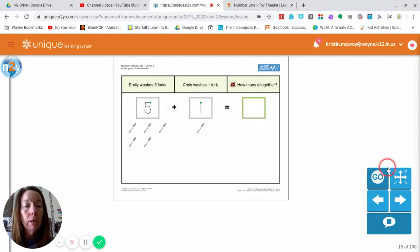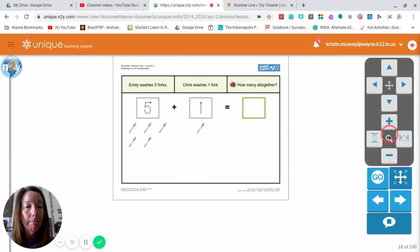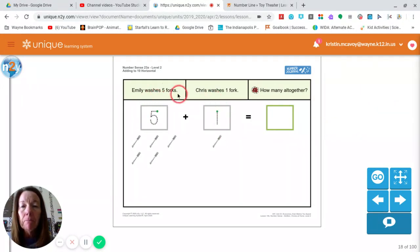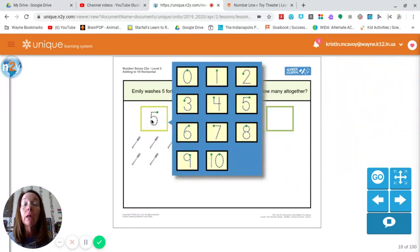We'll begin with this one. In this problem we have forks and the situation is that Emily has washed how many forks? What's that number? Let's count: one, two, three, four, five. Emily has washed five forks. Let's match the number five.